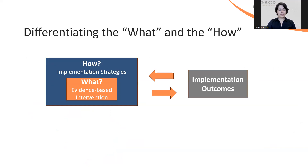As we saw in this last example, the evidence-based intervention and the implementation strategies are distinct, and yet both are necessary to successfully achieve implementation outcomes. In order to improve population health, it's not enough to have certain public health programs or healthcare practices that are effective. We need to think about the people responsible for implementing those programs and practices, the physical and social environment that they operate within, their attitudes and beliefs towards those evidence-based practices, and how these and other factors may hinder or enhance implementation success.